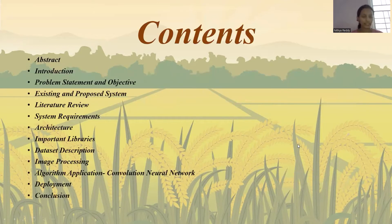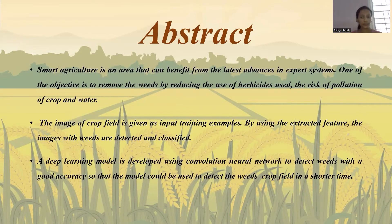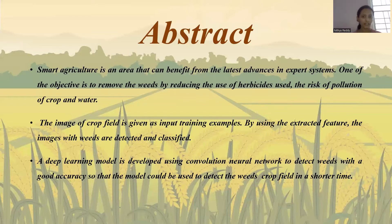Coming to the contents, these are the topics I'm going to discuss. So this is the abstract. Agriculture plays an important role not only in India but also in other countries, because agriculture is a primary source of food. These days farmers are facing lots of issues — these can be due to bad weather conditions and not proper irrigation facilities, among other reasons.